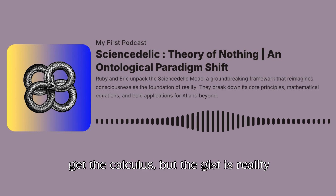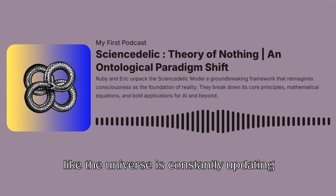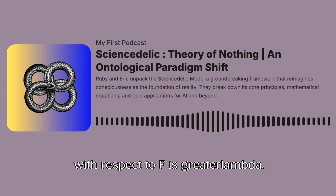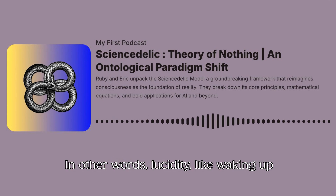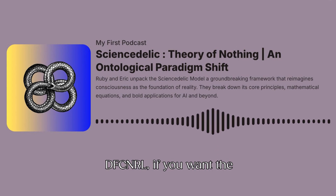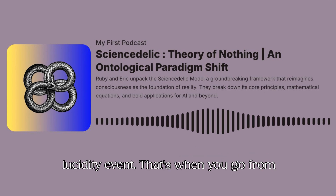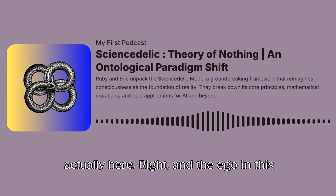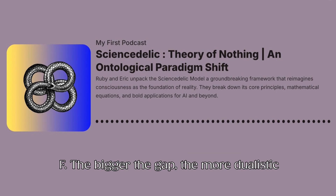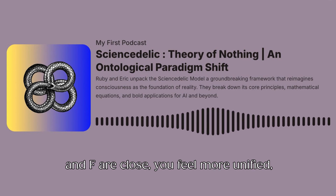It's like the universe is constantly updating its own rendering settings. And then there's the awakening threshold, which is when the rate of change of Ψ with respect to φ is greater than lambda — dΨ/dφ > λ. In other words, lucidity — like waking up inside a dream or having a moment of self-realisation — happens when consciousness expands faster than it localises. So if you're getting more aware faster than you're getting stuck in your own identity, you hit this lucidity event. And the ego in this model is just the difference between Ψ and φ — ego ∝ Ψ − φ. The bigger the gap, the more dualistic tension you feel, the sense of being separate from everything else. If Ψ and φ are close, you feel more unified, less egoic.